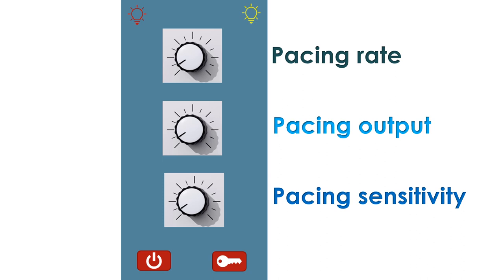Sensing is the capacity of the pacemaker to sense the natural signals from the heart if present, and wait. If a natural signal is not sensed, the pacemaker gives a pacing electrical signal at the end of the programmed interval. Sensing prevents competition between the natural signals of the heart and the artificial signals of the pacemaker, which may cause serious heart rhythm abnormality.